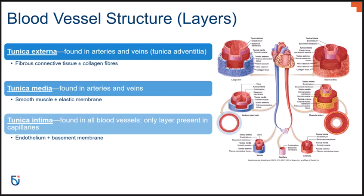The middle layer, the tunica media, is Latin for middle coat. It is made up of a layer of smooth muscle tissue sandwiched together with a layer of elastic connective tissue. The presence of smooth muscle tissue allows for changes in blood vessel diameter, so it acts as something that can dilate or constrict blood vessels.